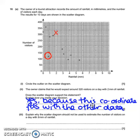So I would be saying we have no data about 9 millimeters of rainfall. I think that's enough information to say why we shouldn't be using this scatter diagram for that estimation.